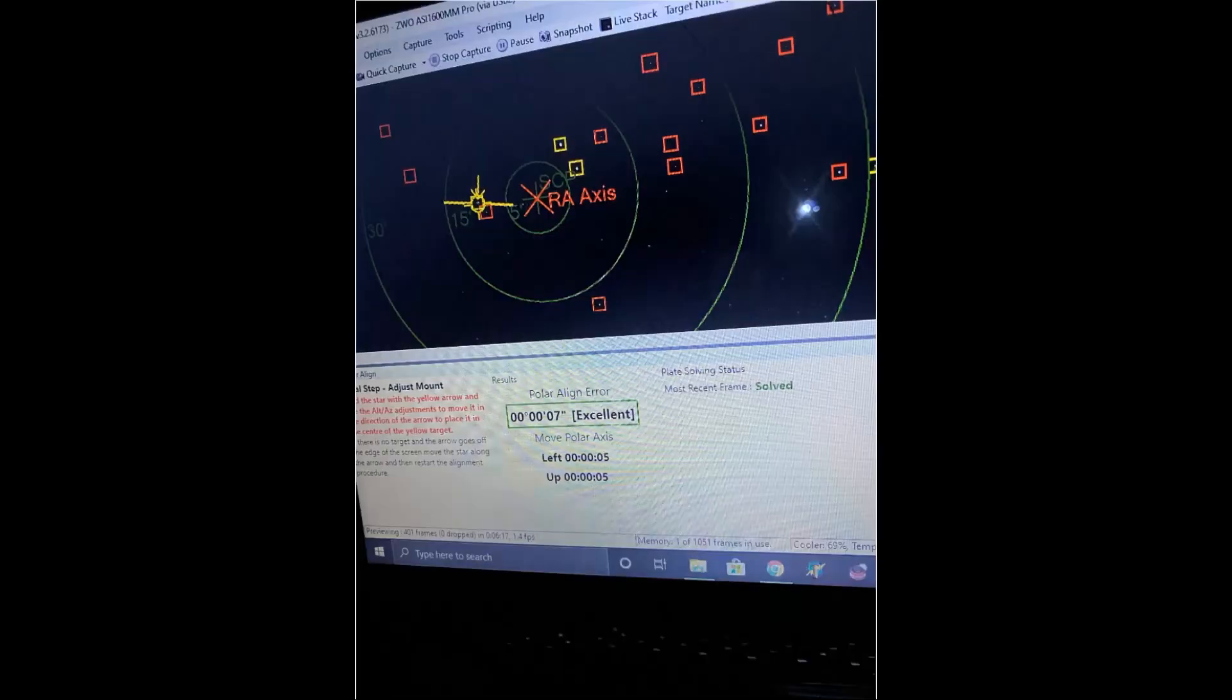I was able to then use the guide scope, the short tube 80, which has a focal length of 400 millimeters, to polar align. In the interim, I used the 1600. So I had that hooked up to the main scope and I used SharpCap and its polar alignment routine to calculate and manually adjust the RA and dec mount adjustments to get it polar aligned.